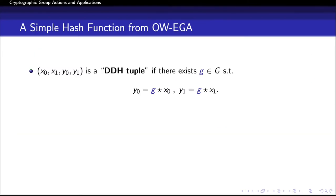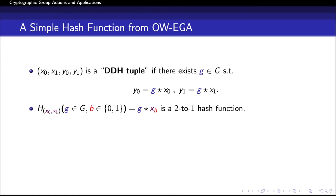Before going into the construction, let me define a couple of terms. For a tuple of four set elements x0, x1, y0, y1, if the discrete log of y0 with respect to x0 equals the discrete log of y1 with respect to x1, I call this a DDH tuple. In a DDH tuple, the same group element maps x0 to y0 and x1 to y1. Next, we define a simple hash function based on the one-wayness of an EGA. The public parameters are two uniformly chosen set elements x0 and x1. The hash function takes a group element g and a single bit b as input, and outputs the action of g on x_b. Because the action is regular, this is a two-to-one function. A collision for this function would reveal the discrete log of x1 with respect to x0, so H is a two-to-one hash function.